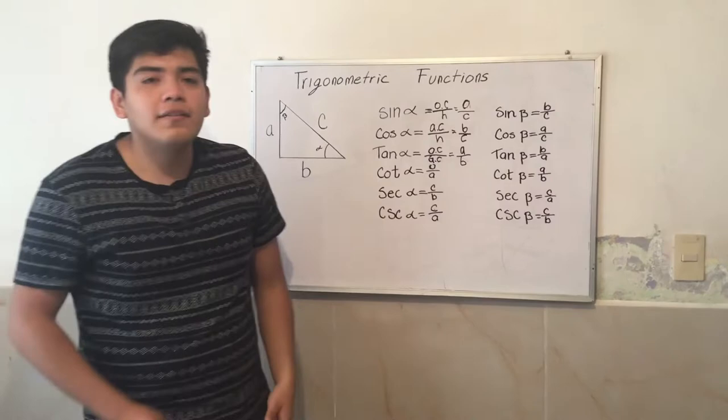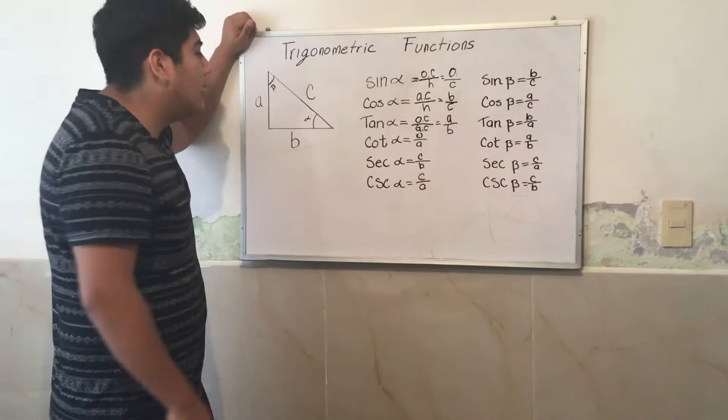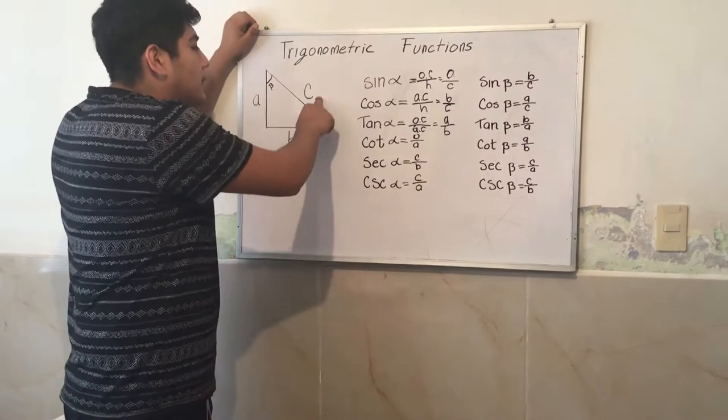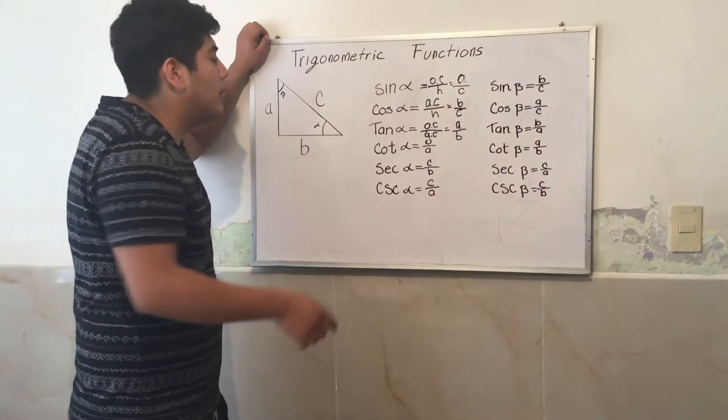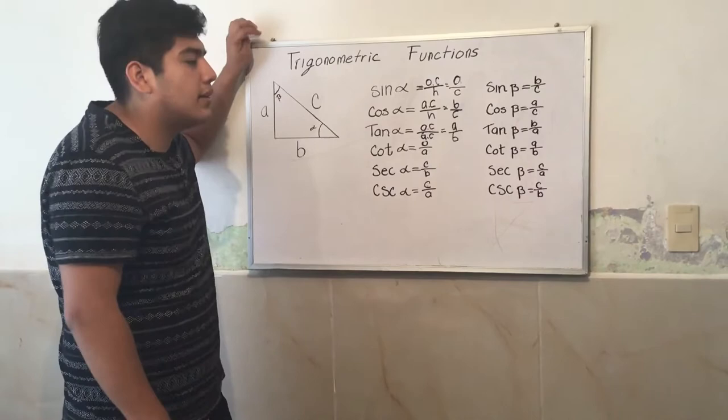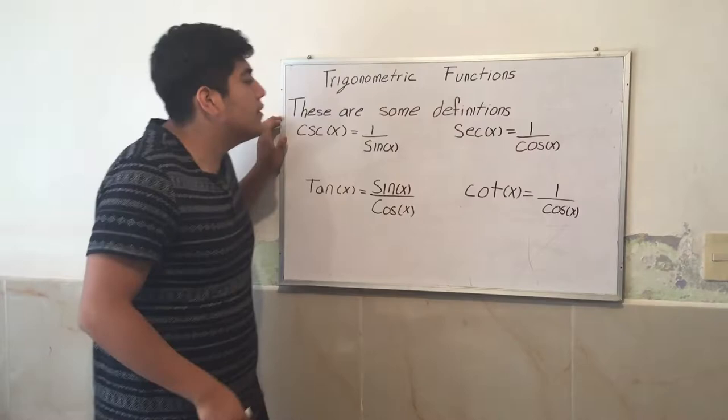For example, sine of alpha equals opposite catetus over hypotenuse, equal A over C. Cosine of alpha equals adjacent catetus over hypotenuse, equal B over C. And tangent equals opposite catetus over adjacent catetus, equal A over B.